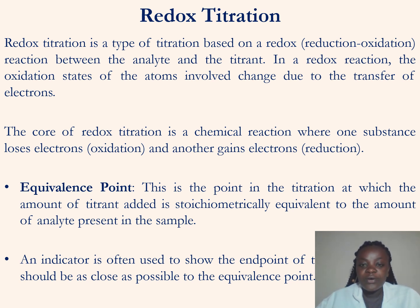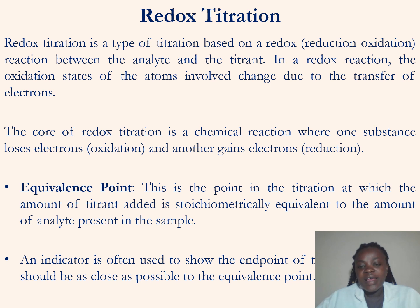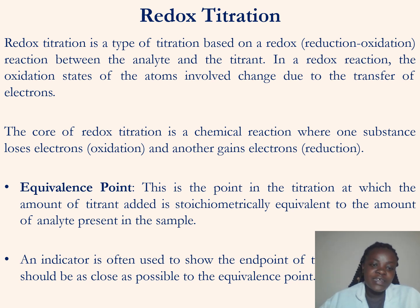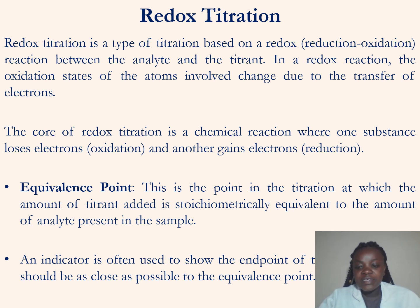In a redox titration we deal with electrons, so we have to write ionic equations. The core of a redox titration is a chemical reaction where one substance loses electrons and another gains electrons. The process of losing electrons is known as oxidation, while the process of gaining electrons is known as reduction. So in a redox titration, one substance loses electrons and the other gains them to form new products.